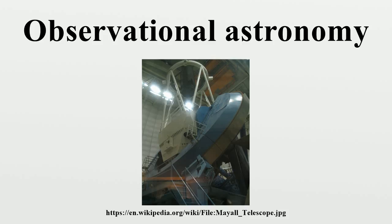A traditional division of observational astronomy is given by the region of the electromagnetic spectrum observed. Optical astronomy is the part of astronomy that uses optical components to observe light from near-infrared to near-ultraviolet wavelengths. Visible light astronomy falls in the middle of this range.